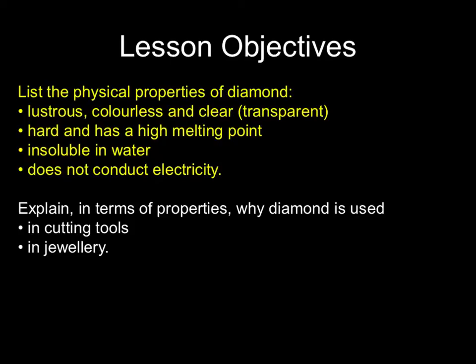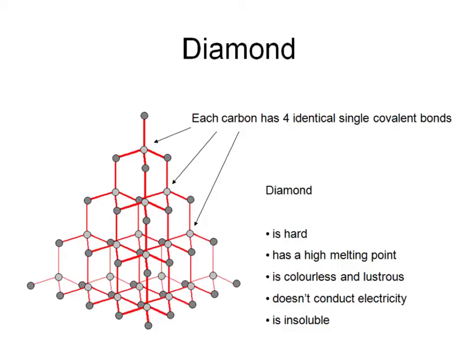You must know and learn the physical properties of diamond and explain, using these properties, why diamond is used for two particular uses: cutting tools and jewellery. Reviewing diamond's structure, each carbon atom has got four identical single covalent bonds and these are strong. This makes diamond hard because it's difficult to break these strong bonds. It's got a high melting point because these bonds take a lot of energy to break. Diamond is also colourless and lustrous, which means it catches the light or shines.